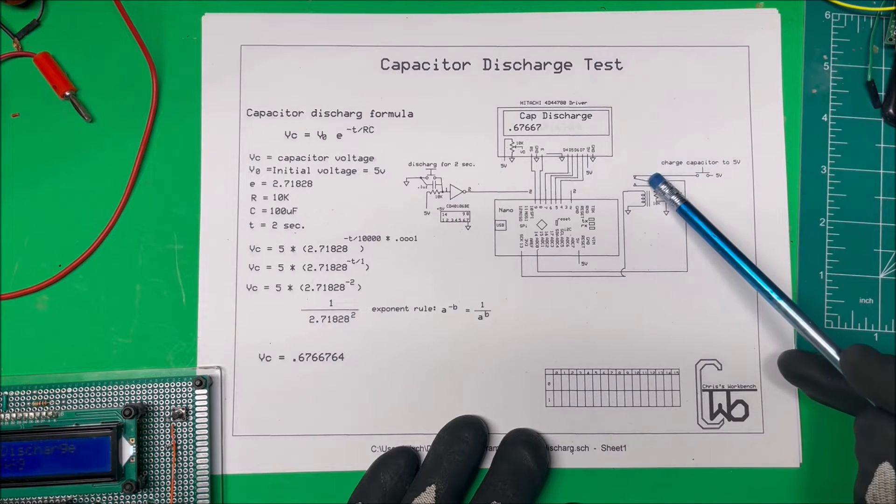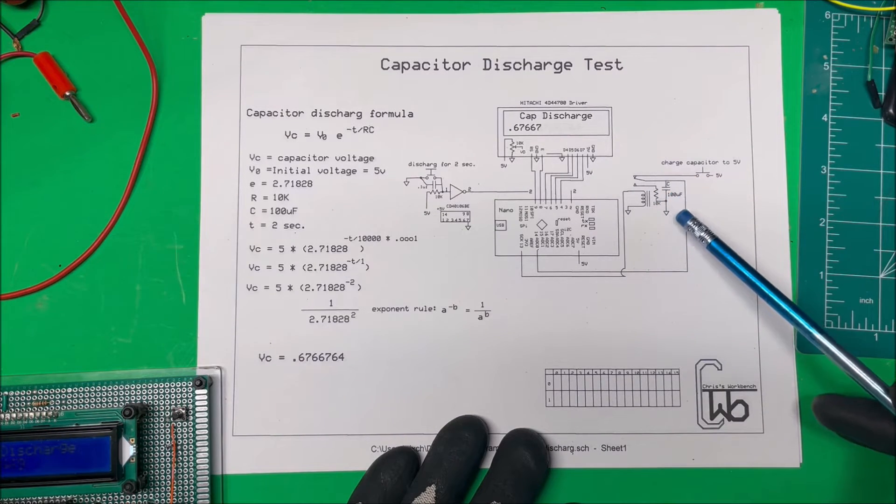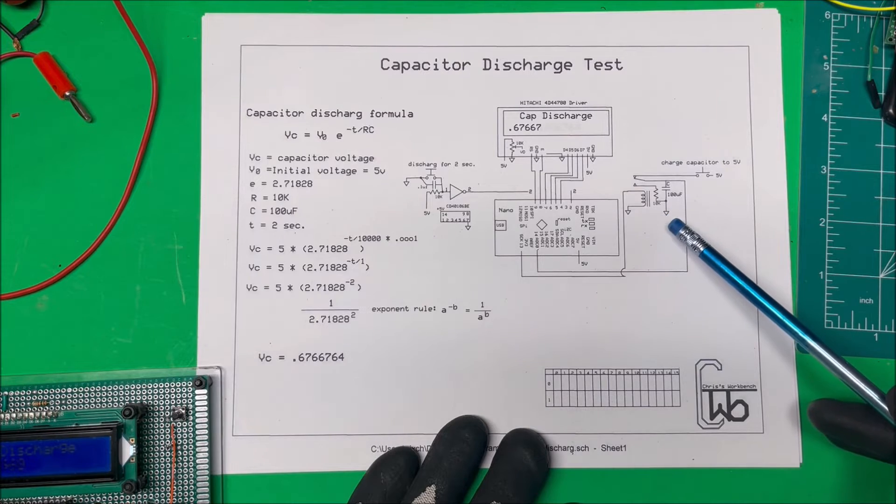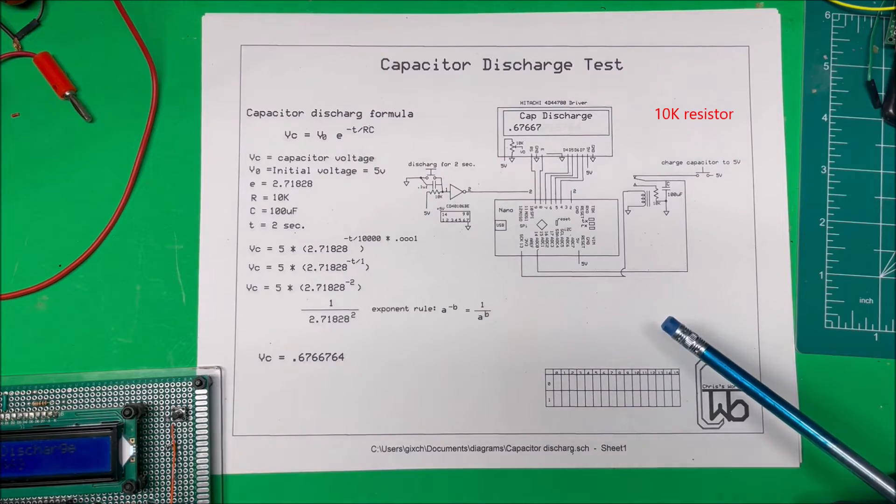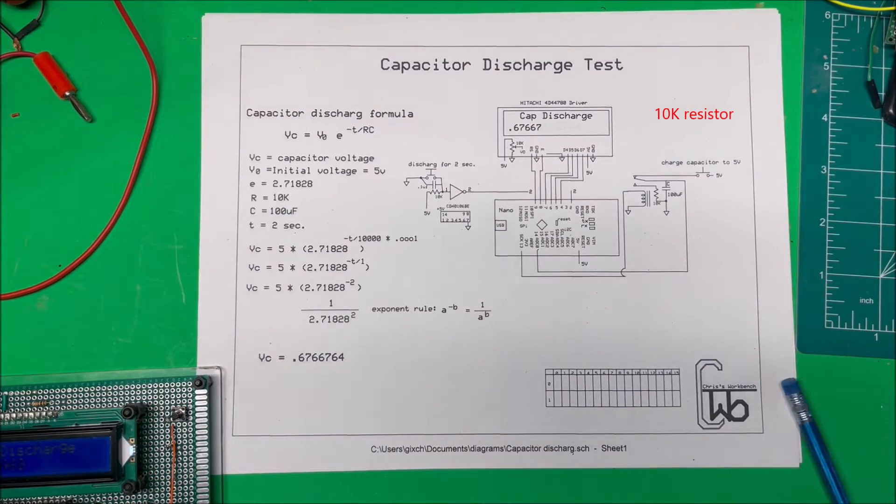So here we're going to charge it up to five volts from positive to ground here. And then when we close this relay, it's just going to discharge through that 10K resistor there. So we're going to give it a try.